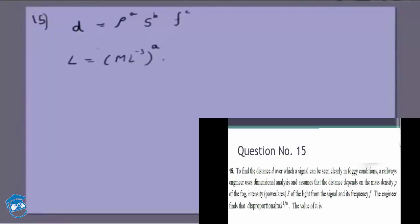Power is force times velocity. So S will be force MLT minus 2 times velocity LT minus 1 divided by area which is L squared, whole to the power of b. And f is just 1 by T, so it's 1 by T whole to the power of c.